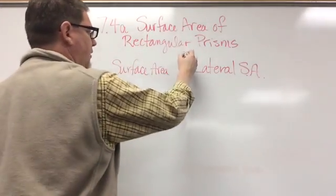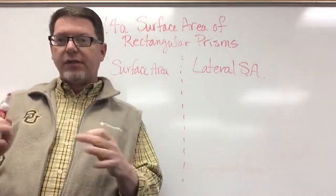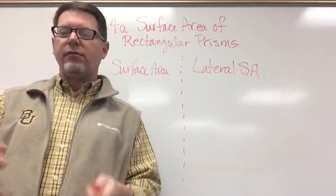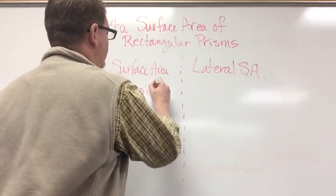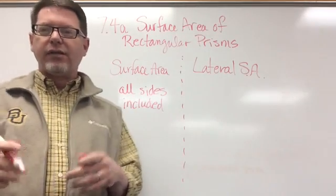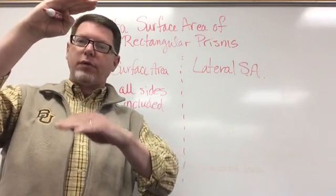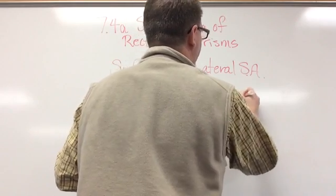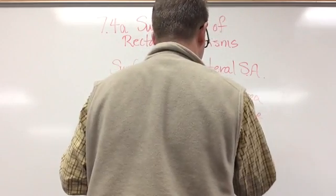I'll just put SA for surface area. I'd like for you to draw a line between those two because we're going to talk about both of them. Total surface area is the total surface area of the rectangular prism — that includes all six sides, because all rectangular prisms have six sides. With lateral surface area, it only includes the four sides. It does not include the two bases, or what we consider the top and the bottom. So it is the surface area without the two bases.